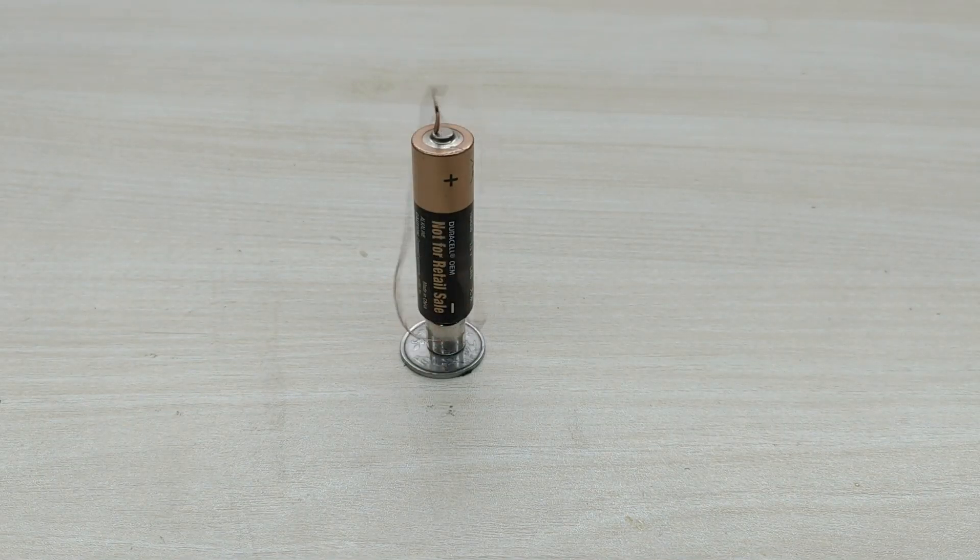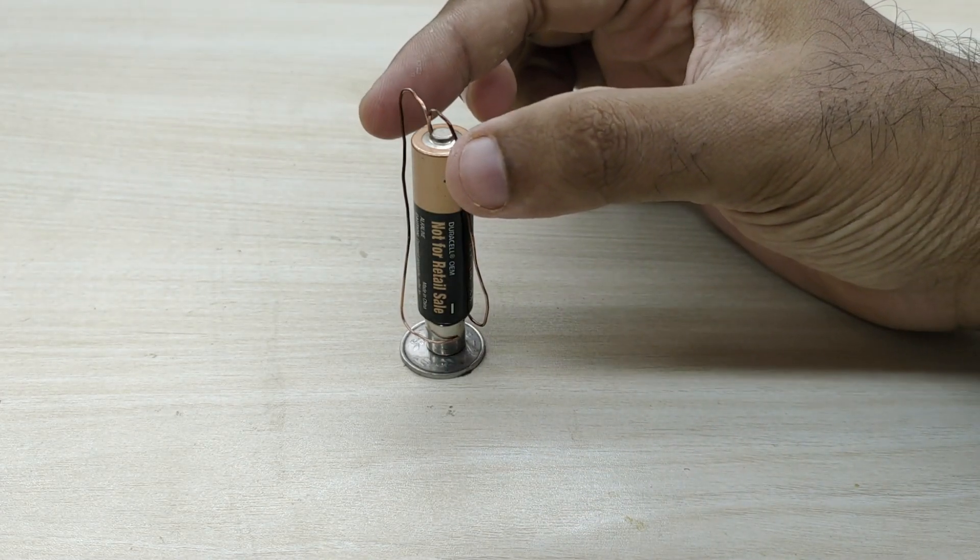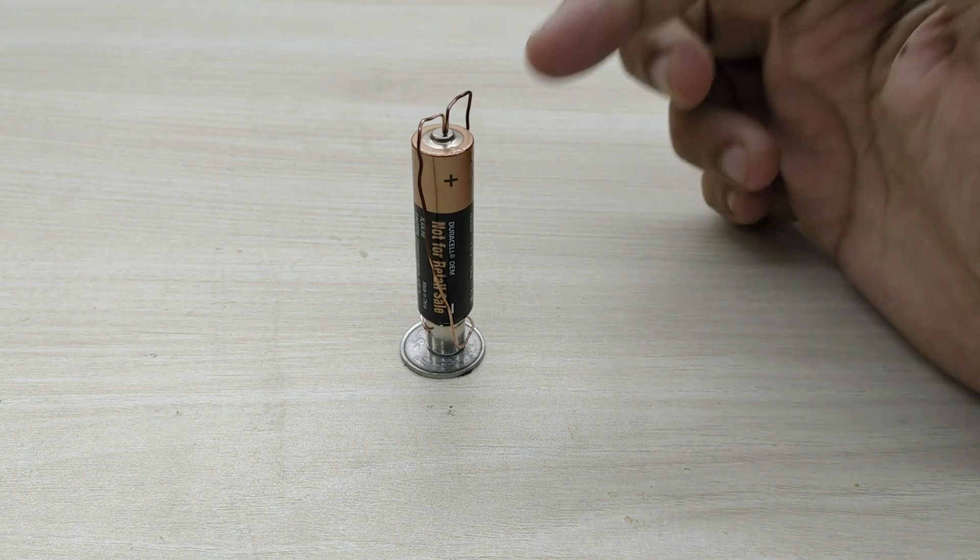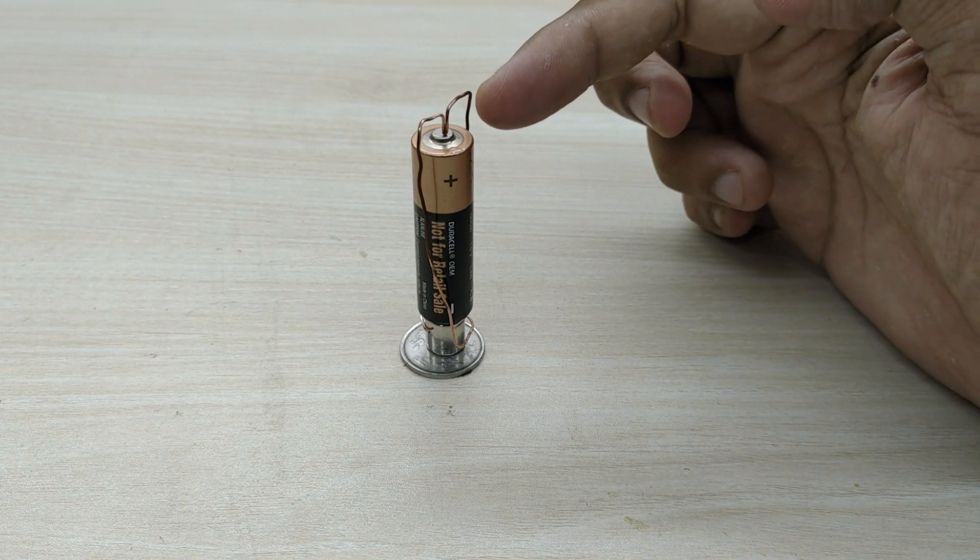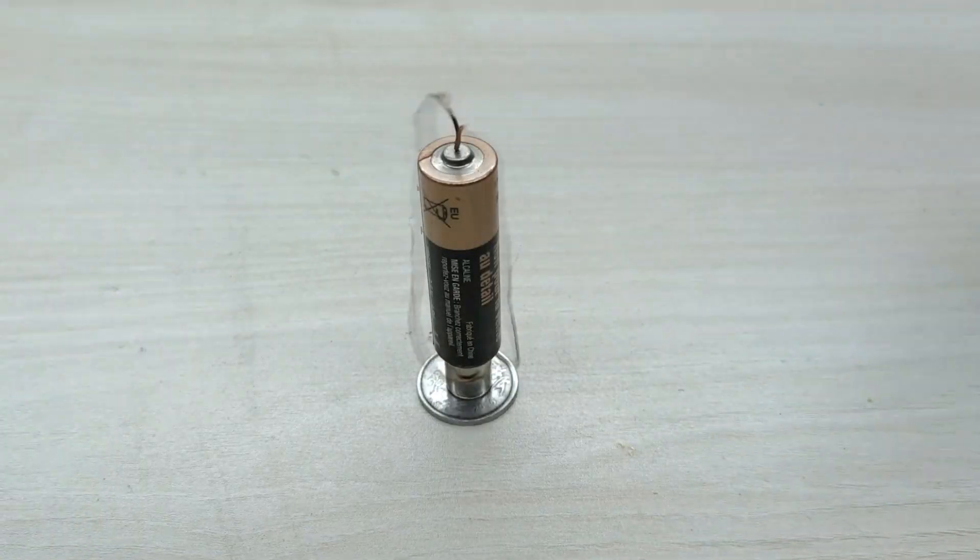You can see that the coil starts rotating. At first it may not be as easy as it looks. The coil may fall off or you may have to give a little push to get the coil started rotating. But finally after some minor tweaks, the coil will start rotating smoothly.